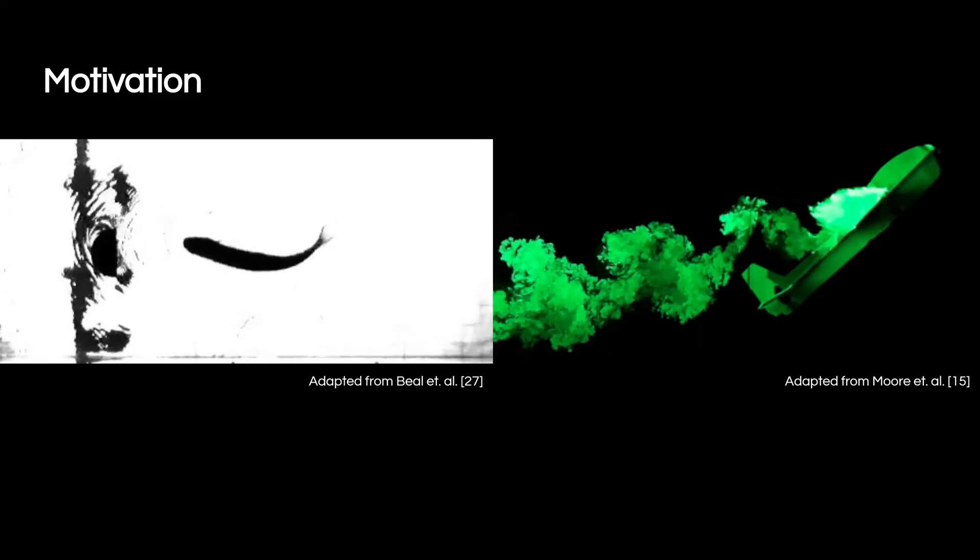In recent years, there has been considerable interest in bio-inspired locomotion that involves complex interactions with the fluid environment, including highly efficient and maneuverable fish-like swimming and perching maneuvers for winged aerial vehicles. However, there has been relatively little work in robotics on physics-based optimization of hardware designs and gaits while reasoning about the fluid environment.